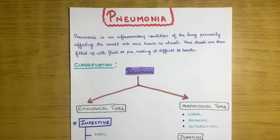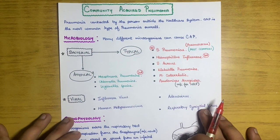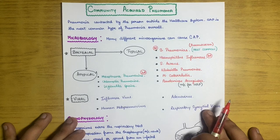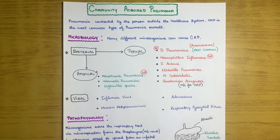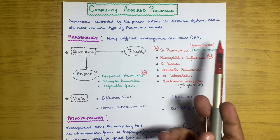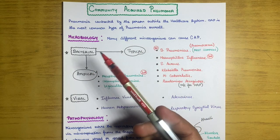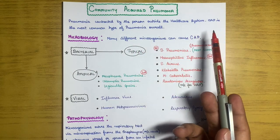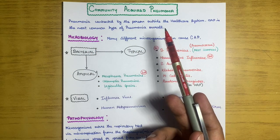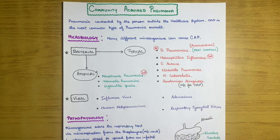Now we will read about the first most important type: community acquired pneumonia (CAP). CAP is the pneumonia contracted by a person outside the healthcare system — in the surroundings and society where we live. It is also known as CAP, and it is the most common type of pneumonia overall.